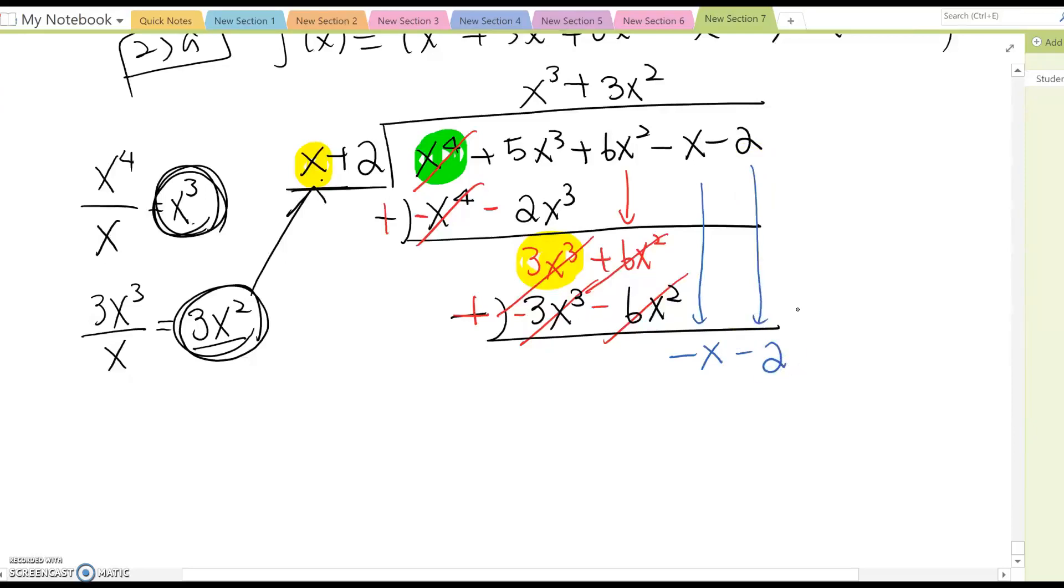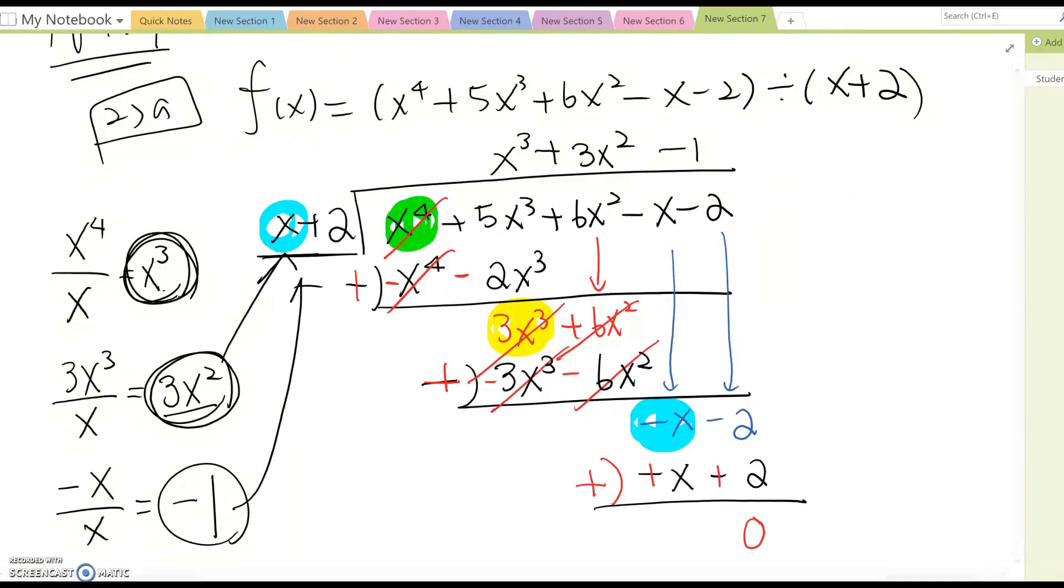Now, same thing. You divide this leading term and this leading divisor term here. So what is the negative x divided by x? Yeah, it becomes negative 1. So you put negative 1 on quotient area here, and you multiply this with divisor, which is negative x minus 2. Then you subtract them, which means switch the sign, so become plus and plus. So equal to 0. Therefore, this case, the answer is this one, and then no remainder.